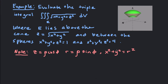Hey guys, what's up today? We got a triple integral. We're going to try to find the value of this integral over the region E that lies above the cone z equals the square root of x squared plus y squared, and between the spheres x squared plus y squared plus z squared equals 1 and x squared plus y squared plus z squared equals 4. So we have a sphere of radius 2 and a sphere of radius 1. We want to be between those spheres and above this cone — that looks like this region over here. Very interesting region.